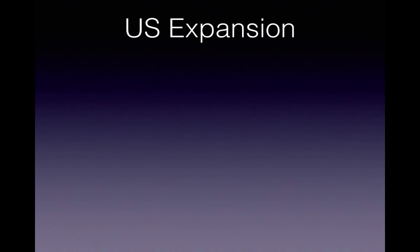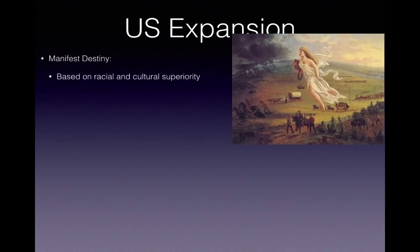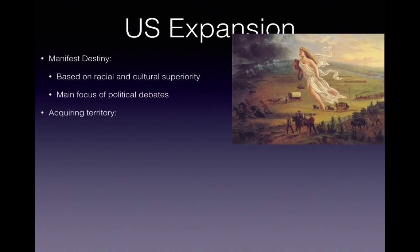Let's get started with U.S. expansion. Manifest Destiny — know it. It is mentioned in the new curriculum. This was based, according to the new curriculum, on racial and cultural superiority. Be familiar with the painting which depicts Columbia expanding out west. It is the main focus of political debates in the 1840s and 1850s, because as the U.S. is expanding, the number one question will be: will that land be free or slave?